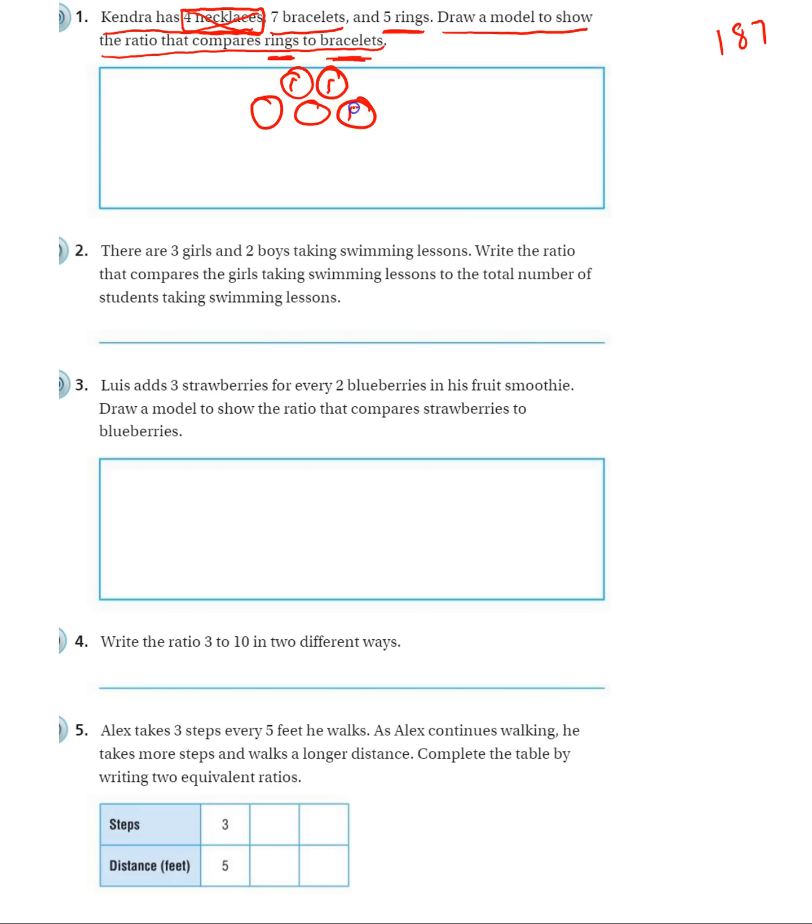And particularly if you're making your model like this, you probably want to label it. So I'm going to put an R in each one of these for rings. And I may even want to do a little key, R equals rings. This just makes it very clear to whoever is looking at this what you mean, because rings and bracelets are going to look very similar.